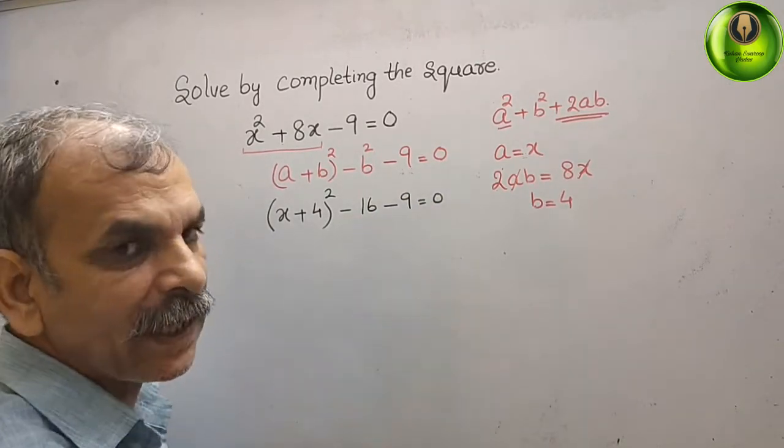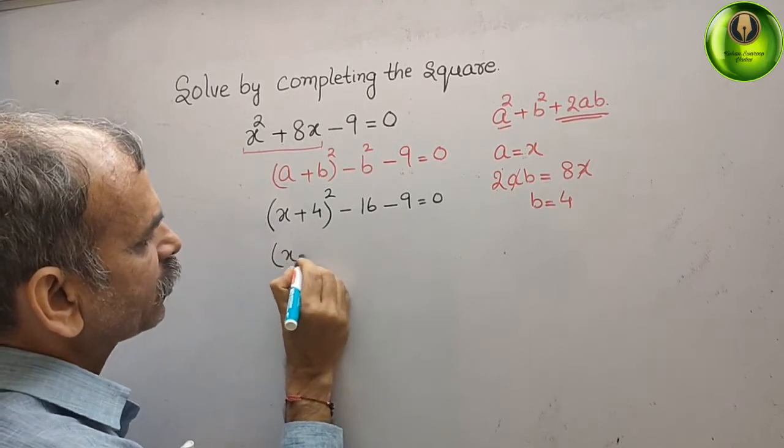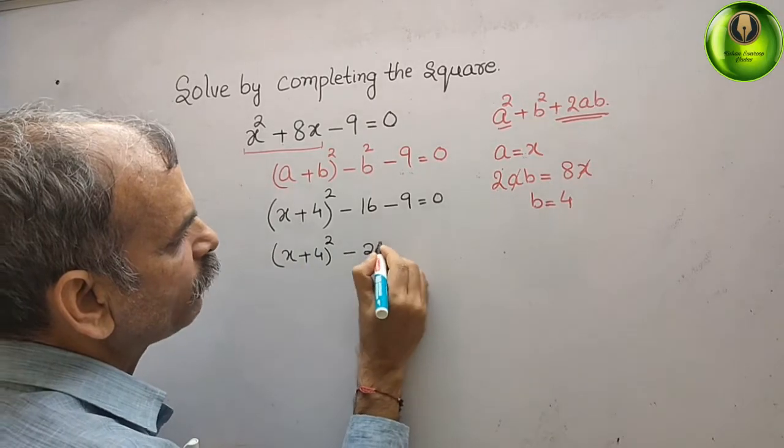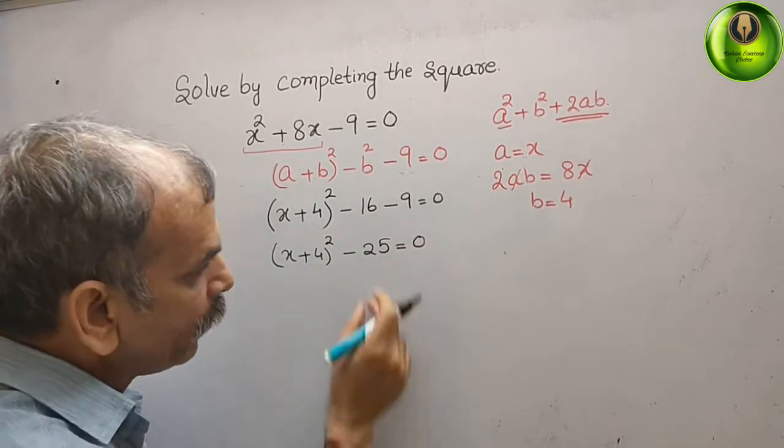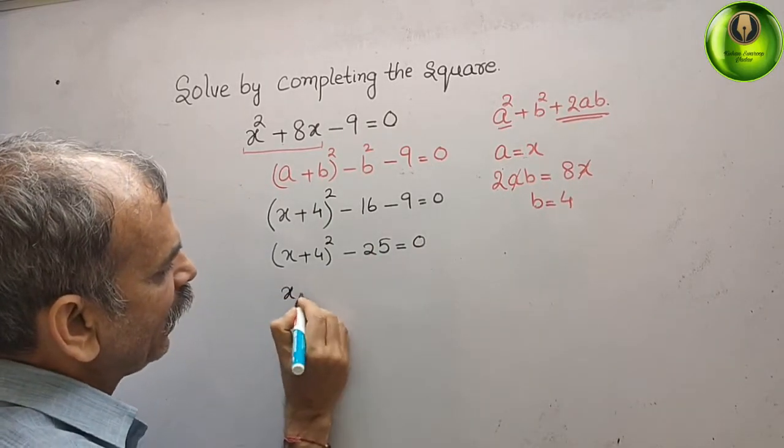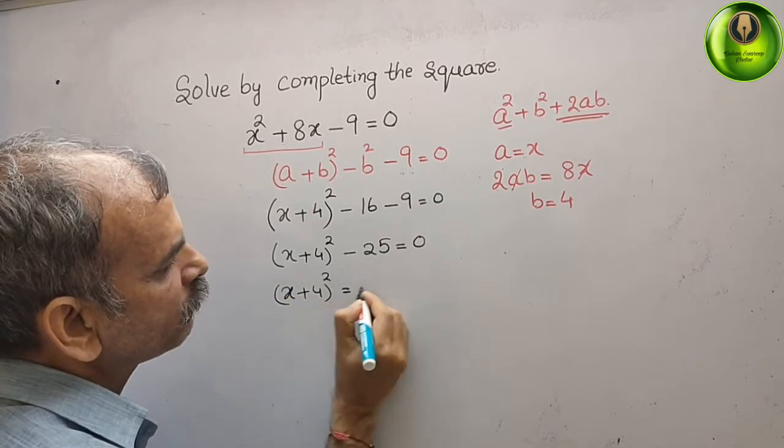16 minus 9 is minus 25. That we will write: (x + 4)² - 25 = 0. Now bring this 25 to right side. We will get (x + 4)² is equal to 25.